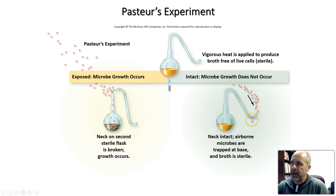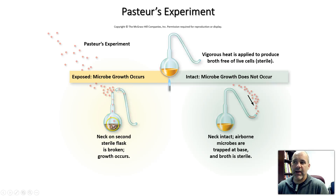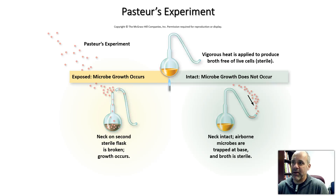Microorganisms were getting trapped in that crook of the flask. And he showed that if he broke the swan neck and allowed any microbes in the air to have access to the fluid, that fluid would turn cloudy. This was back in the 1800s, when people had not yet put two and two together that there were invisible microorganisms in the air around us all the time — and Pasteur helped show that.